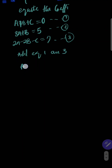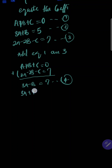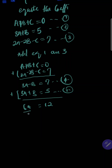So we have Equation 1: A plus B plus C equals 0, and Equation 2: 2A minus 2B minus C equals 7. Adding these two equations together, C cancels out and you get 3A minus B equals 7 — call this Equation 4. Now combining Equation 4 with Equation 2 — which is 3A plus B equals 5 — adding these two equations together gives 6A equals 12. Dividing both sides by 6, A equals 2.